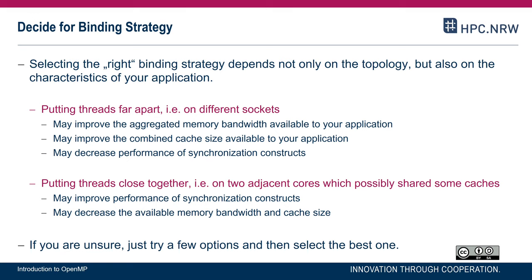However, if two threads share a cache, synchronization constructs often deliver higher performance — for example, a lock variable could reside in the shared cache and travel faster between cores than between two sockets. Putting threads far apart means with two threads on two different sockets you can profit from the aggregated cache sizes and aggregated memory bandwidth, though fine-grained synchronization constructs may come at slightly higher overhead. If you don't know what is right for your application, try a few options and select the one that works best.